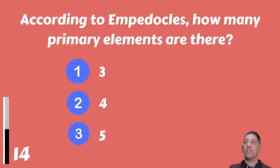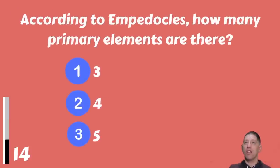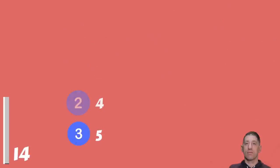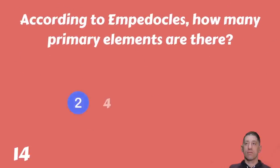According to Empedocles, how many primary elements are there — three, four, or five? The answer is four.